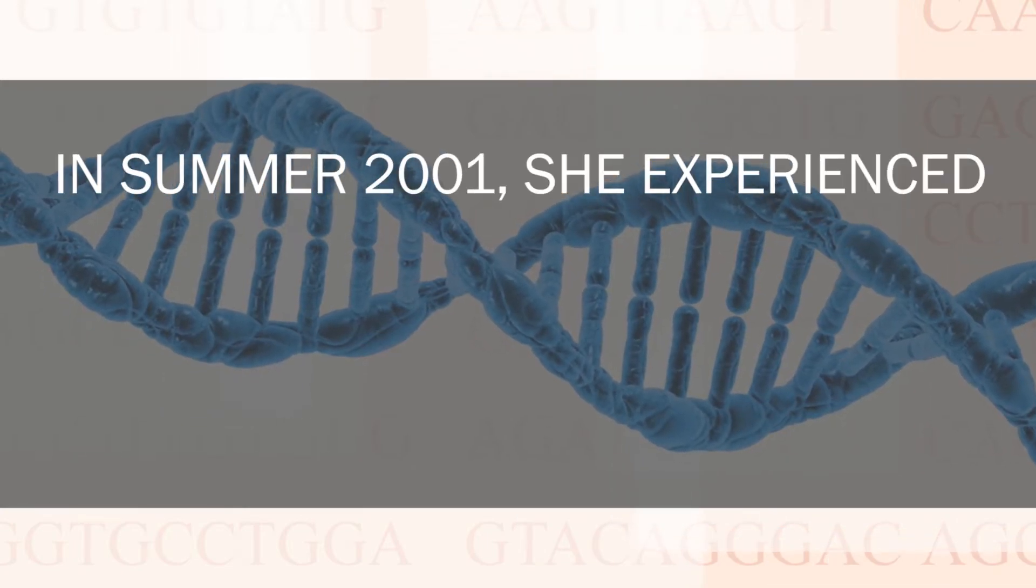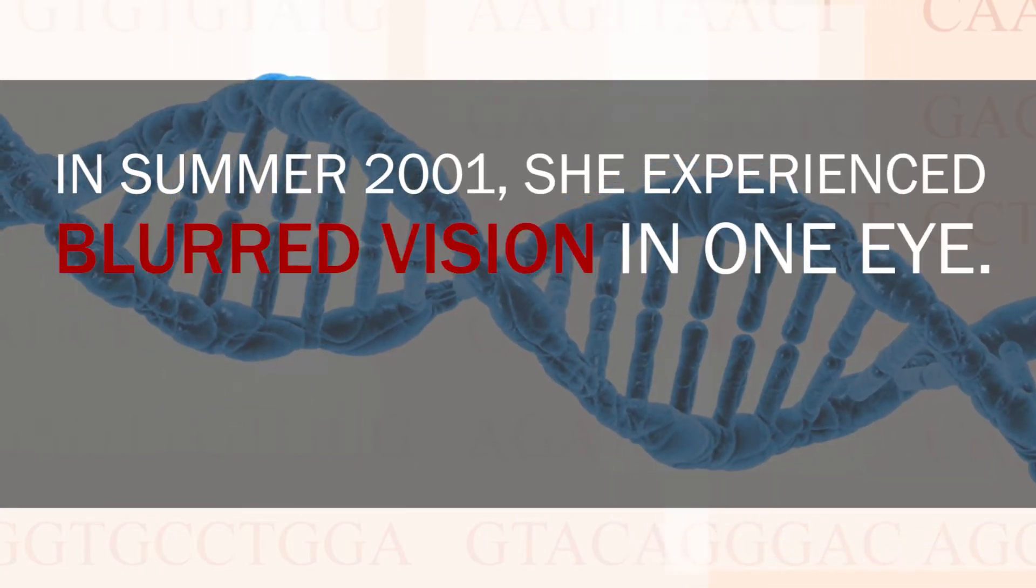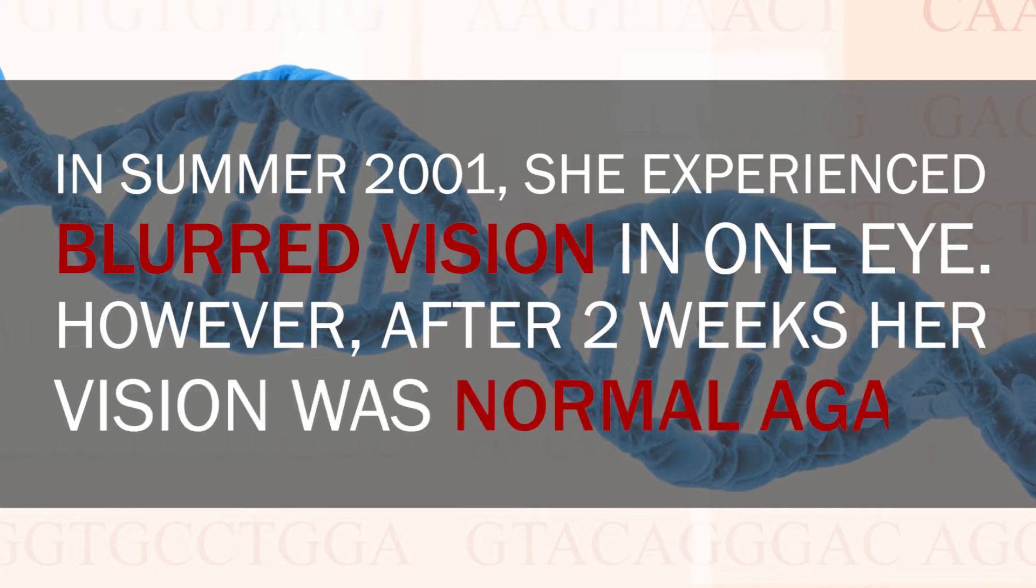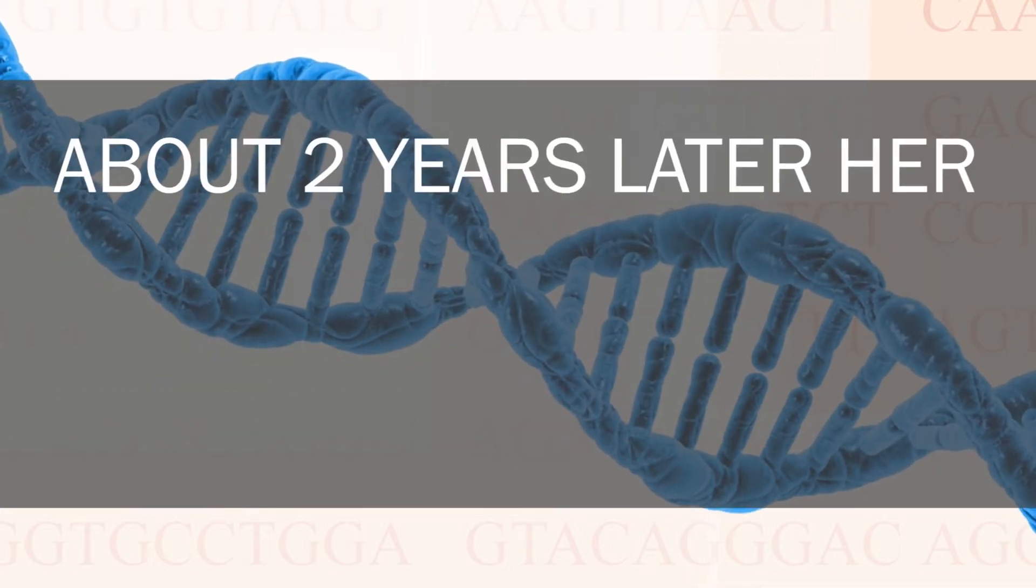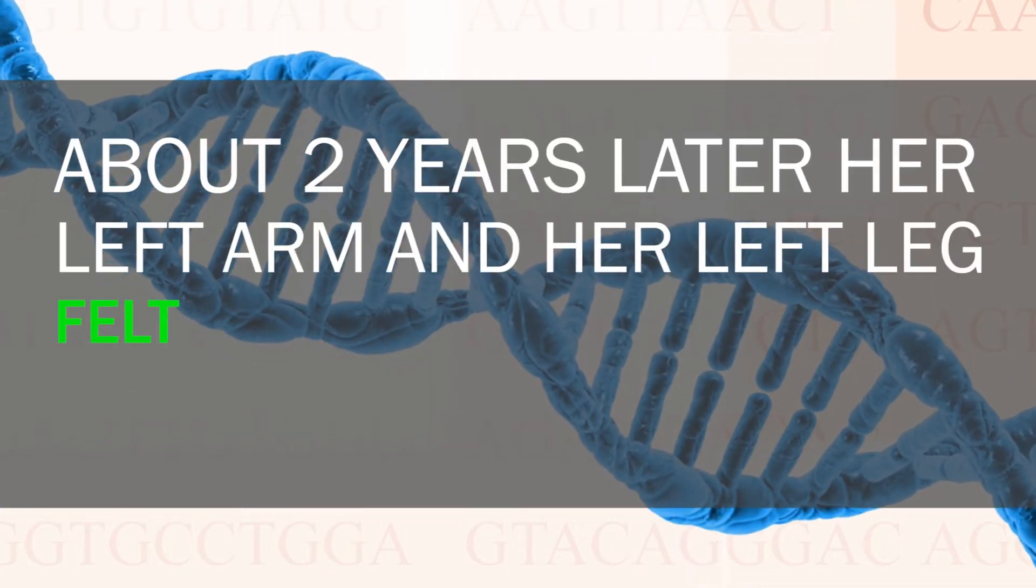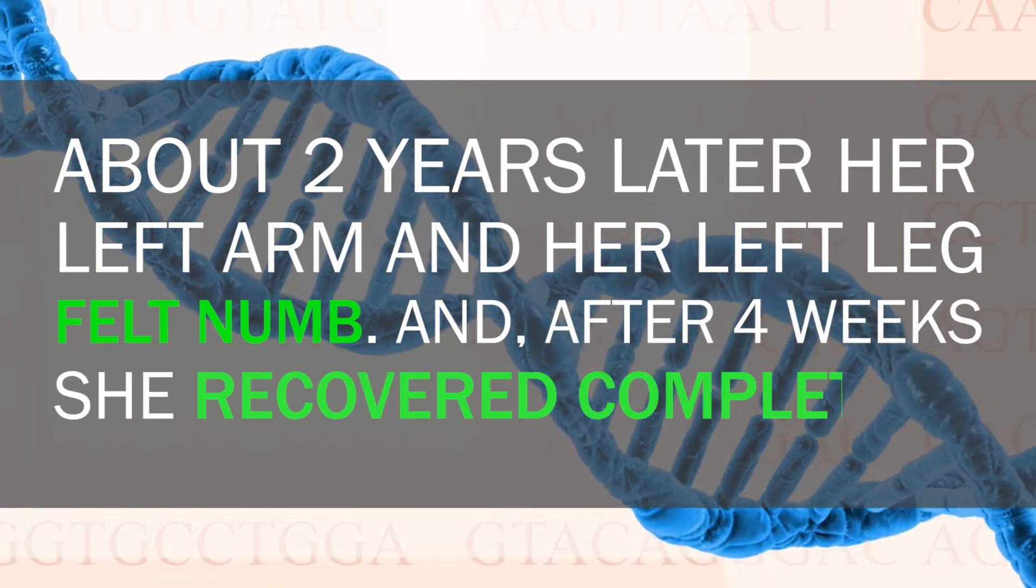The patient history of a 37-year-old teacher underlines a unique progression of the disease. In summer 2001 she experienced blurry vision in one eye, however after two weeks her vision was normal again. About two years later her left arm and left leg felt numb and after four weeks she recovered completely.